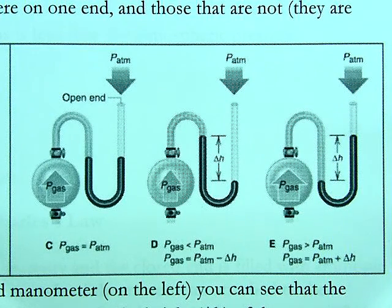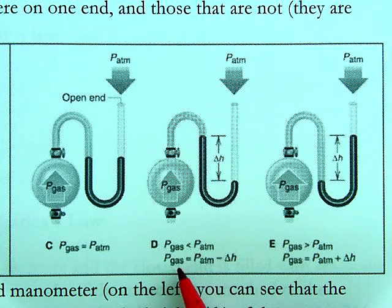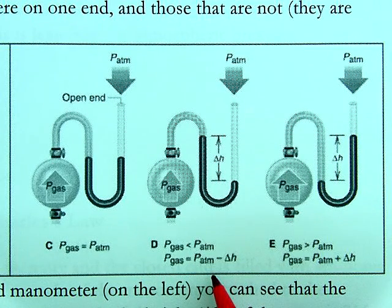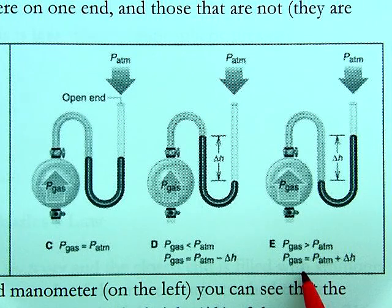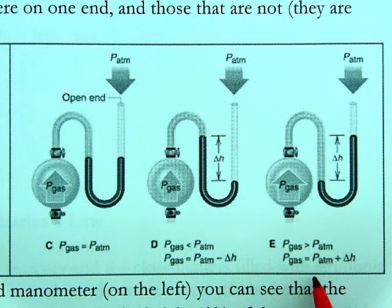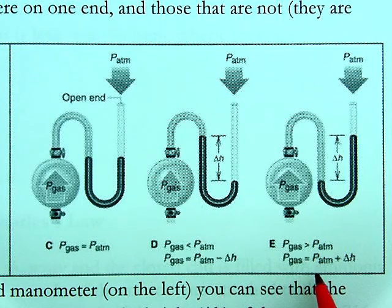In these problems it's really about figuring out, based on which side of the mercury goes up or down, whether the pressure of the gas is larger or smaller than atmospheric pressure. If P_gas is less than P_atm, then P_gas equals P_atm minus delta H. If P_gas is more than P_atm, then P_gas equals P_atm plus delta H. Delta H, the change in height, is in millimeters of mercury, so all pressure units need to be in mmHg.